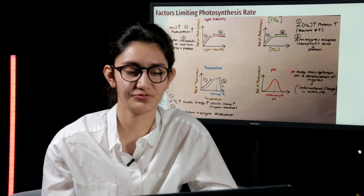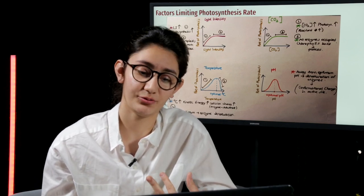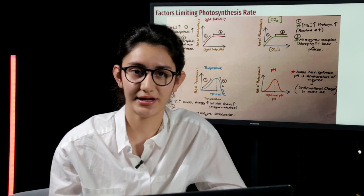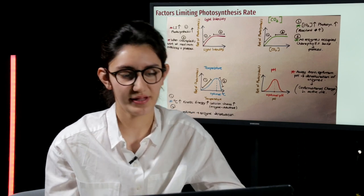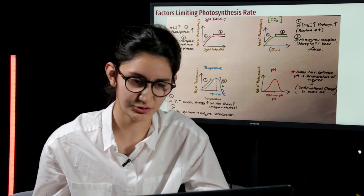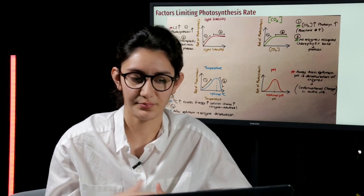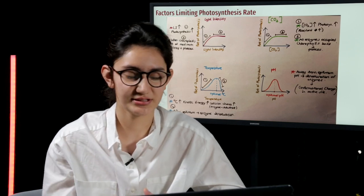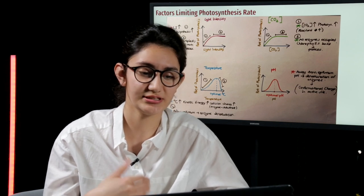Finally, I will talk about the factors that limit photosynthesis rate. There are four of them: light intensity, carbon dioxide concentration, temperature and pH. Light intensity and carbon dioxide concentration show similar patterns. They increase up to a point, but after that point, they reach a plateau. They increase up to a point because as we increase the light and the concentration of carbon dioxide, the reactants and required elements for photosynthesis rate increase. Therefore, the photosynthesis rate increases.